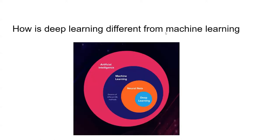How is deep learning different from machine learning? From this picture you can see that under the big topic of artificial intelligence, there's machine learning, which includes dozens of different methods like linear regression and logistic regression. As a subset of machine learning there are neural networks, and when there are many layers in a model we say it becomes a deep learning model. This is where deep learning is located in the big picture of AI.